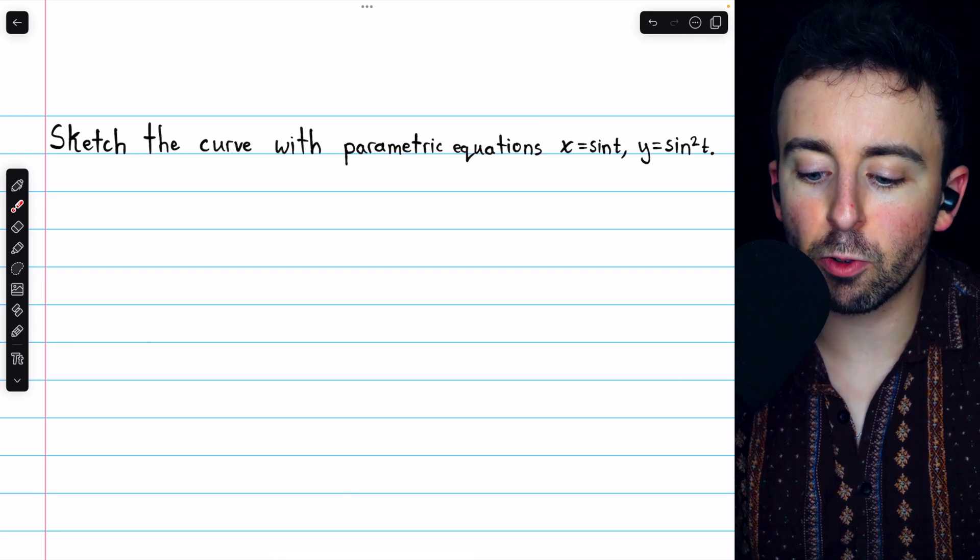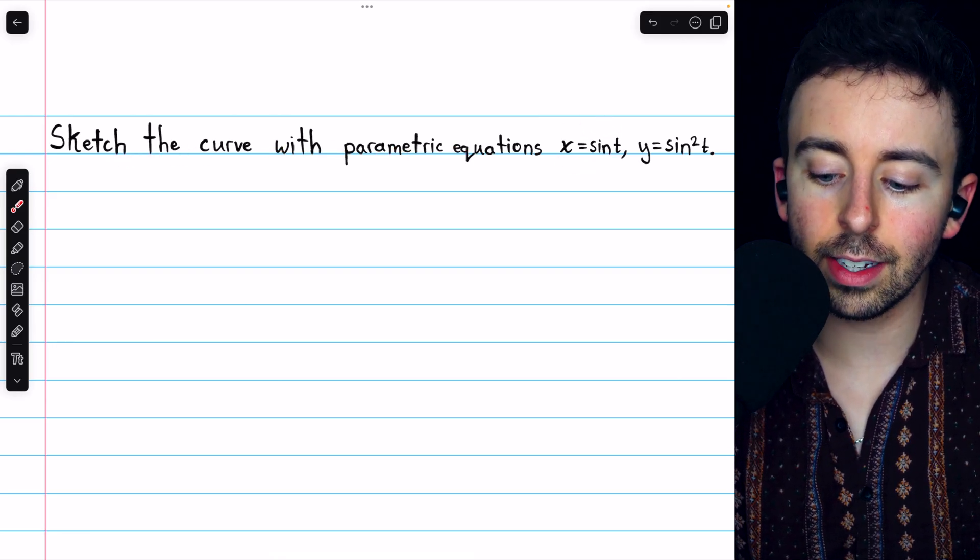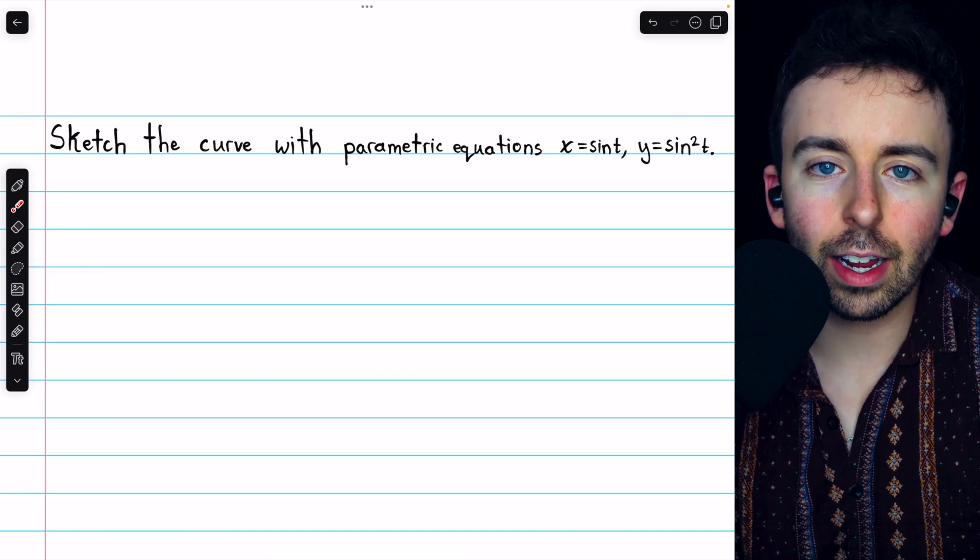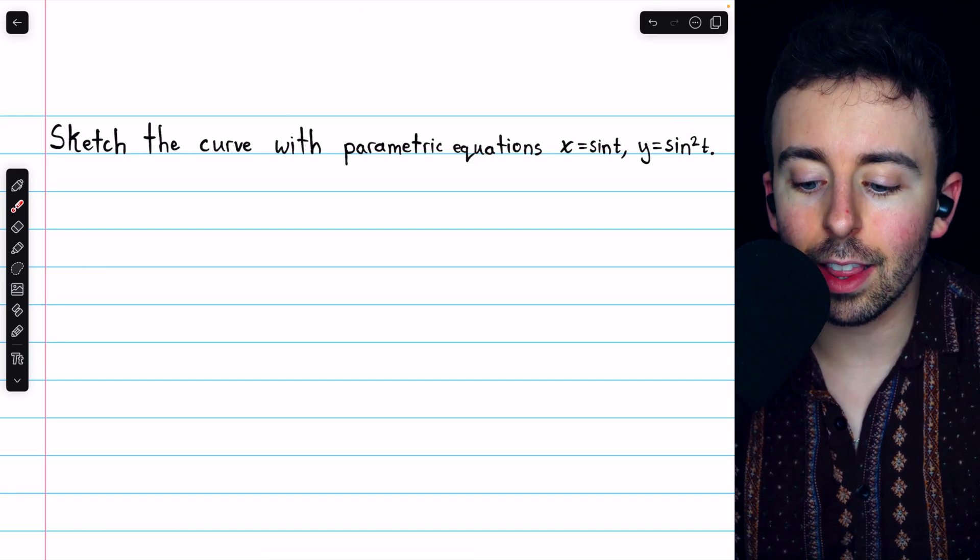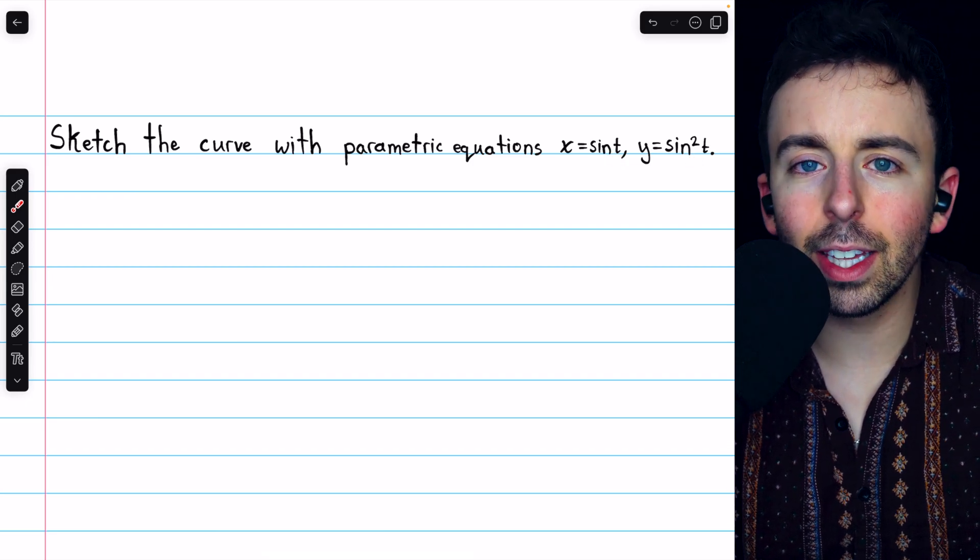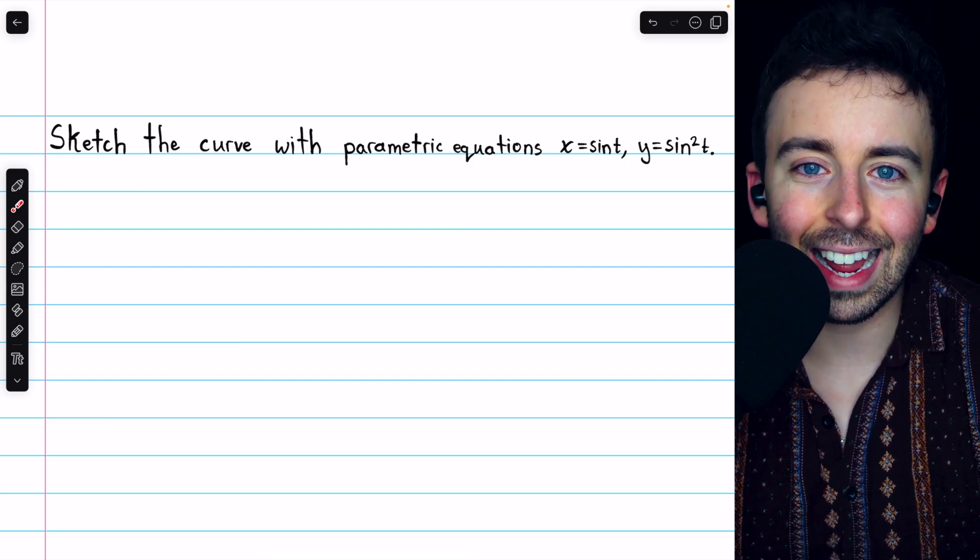To sketch the curve with parametric equations x equals sine t and y equals sine squared t, we should first see if we can eliminate the parameter t and thus get a familiar equation in y and x.